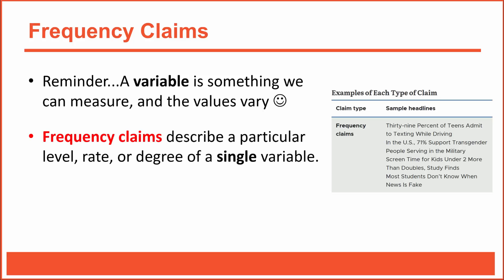Frequency claims are claims based on one single individual variable. For example, if I were to say approximately 40% of college students report drinking alcohol each week, that would be an example of a frequency claim. When I mention frequency claims, try not to get too fixated on the word frequency, because frequency claims don't always report frequencies — percentages are technically relative frequencies. Frequency claims describe a level, rate, or some degree of one single individual variable. That's the key feature that distinguishes frequency claims from association claims and causal claims.